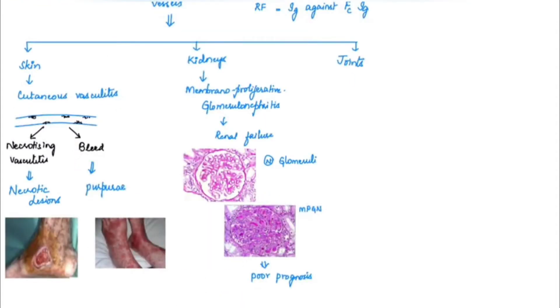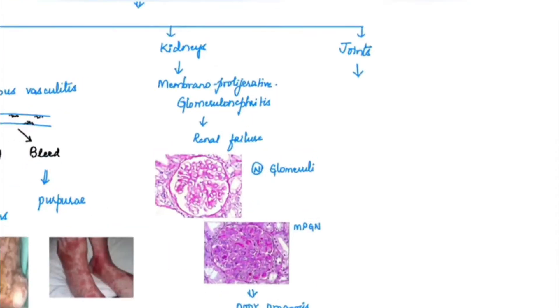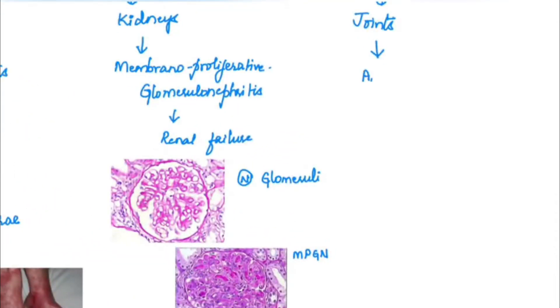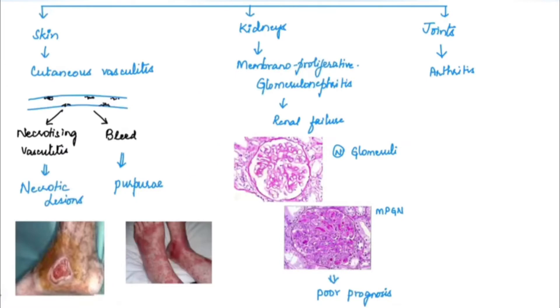When the joints are involved, it leads to arthritis. These are the clinical features of cryoglobulinemic vasculitis.